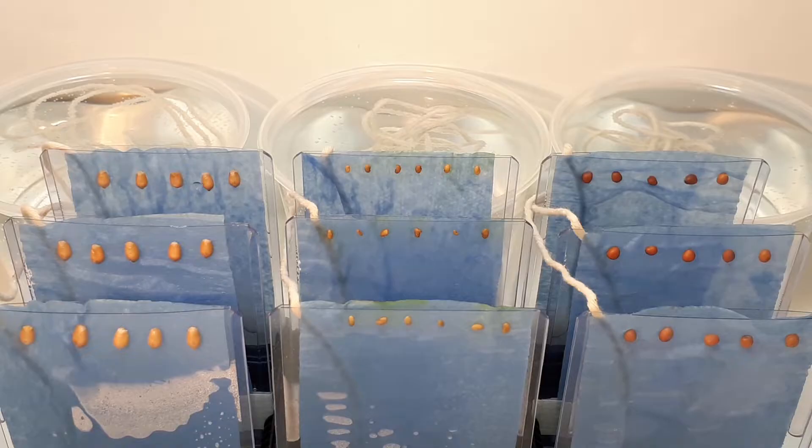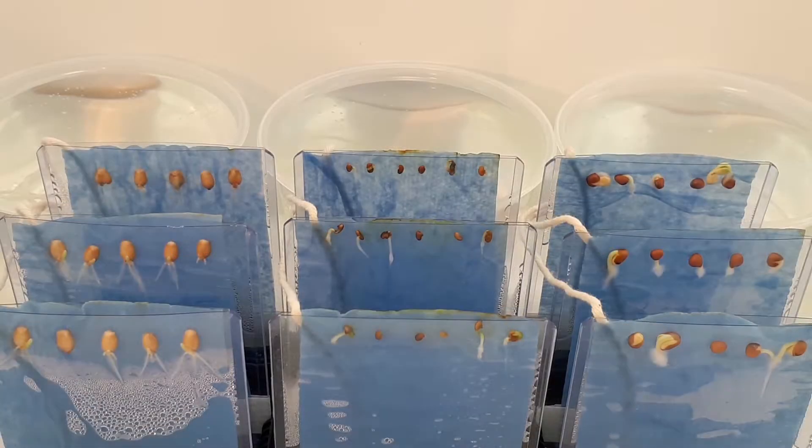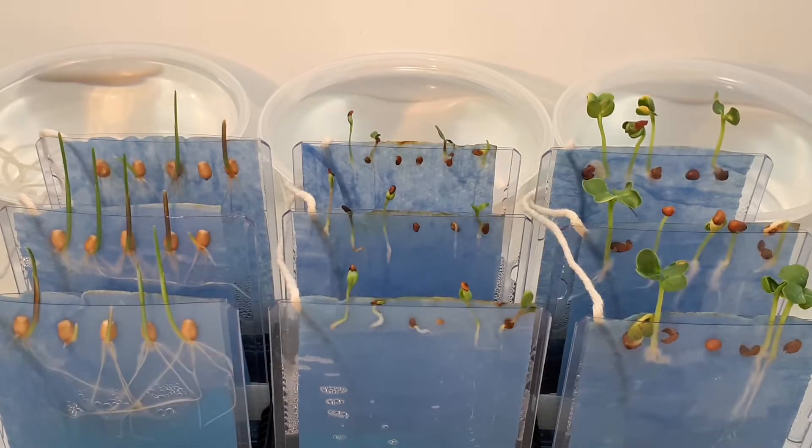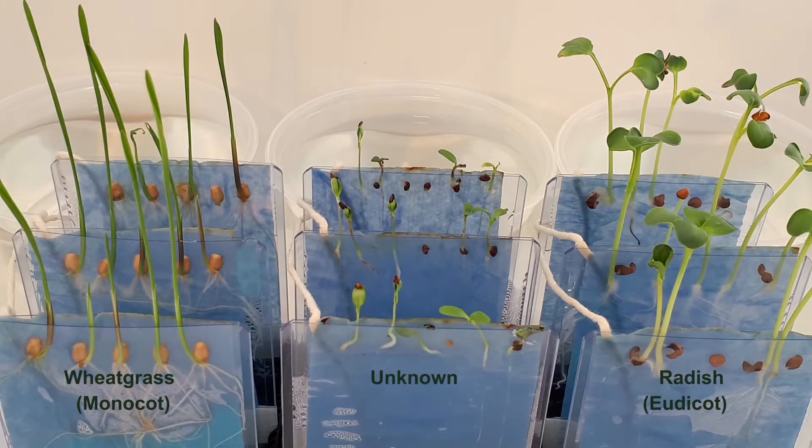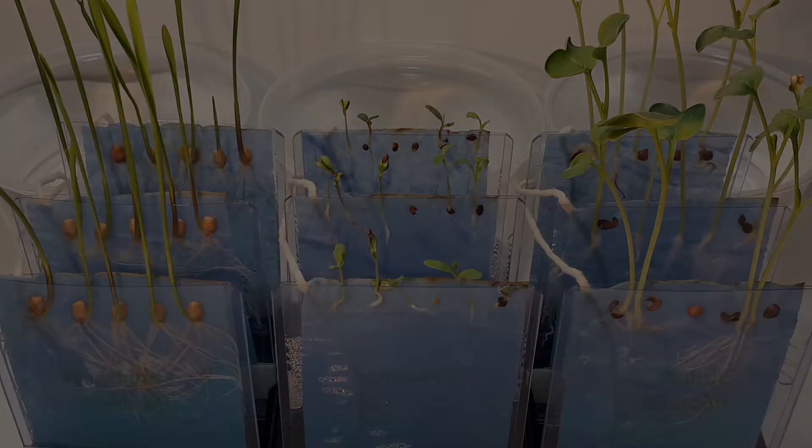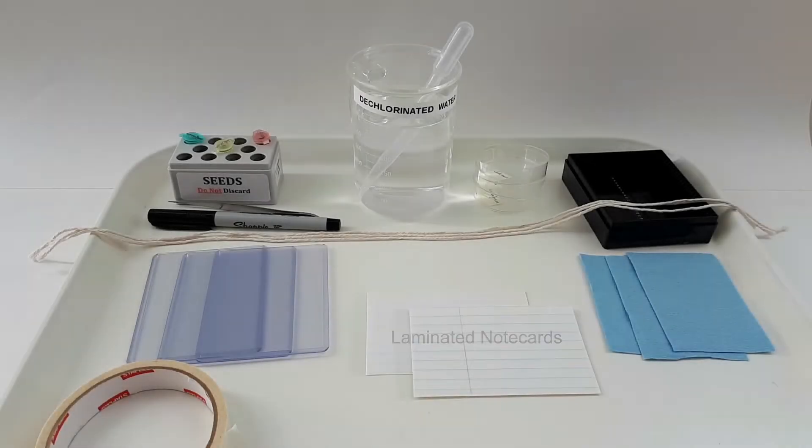In this lab, you will set up plant pockets growing three different types of seeds: a monocot, a eudicot, and an unknown. To make each plant pocket, you will need two pieces of laminated note card, a rigid plastic card holder, a piece of shop towel, and a piece of cotton string.